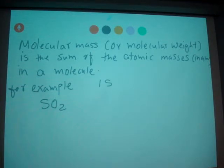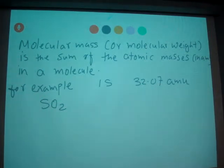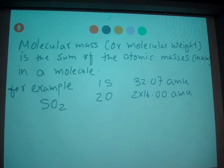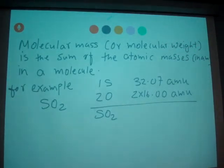In SO2, we have one sulfur with atomic mass 32.07 amu, and two oxygen atoms, which is 2 times 16.00 amu. For the SO2 molecule, we have 64.07 amu.